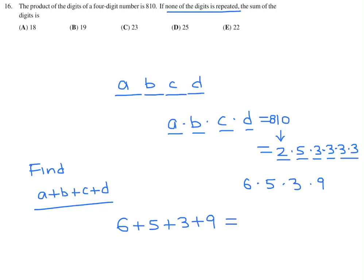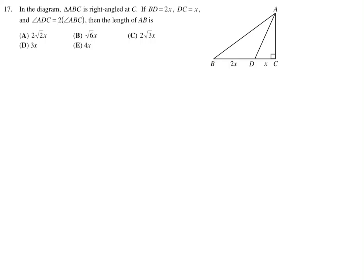And you can verify 6 times 5 times 3 times 9 is indeed 810. Now I've got to find the sum. No problem. 6 plus 5 plus 3 plus 9. And if I remember my addition, I will know that this is 23. So 16, the answer is C.